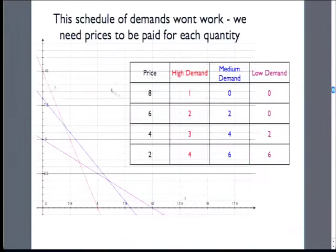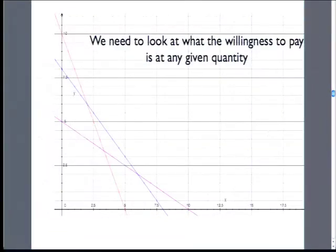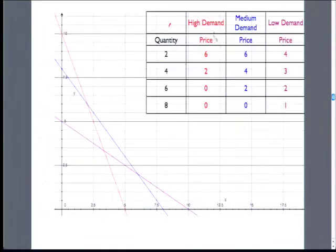This type of spreadsheet that we started with isn't going to work. We need to change it so that we have prices paid for each quantity. The schedule I started with was how many would we buy for each price. So we need to look at the willingness to pay for each quantity. Here I've switched it — this is quantity and how much the person would pay. So this is the number of lamps. This person is willing to pay a lot for a smaller number of lamps. These are three different demand curves, and we need to add them up — vertically this time.